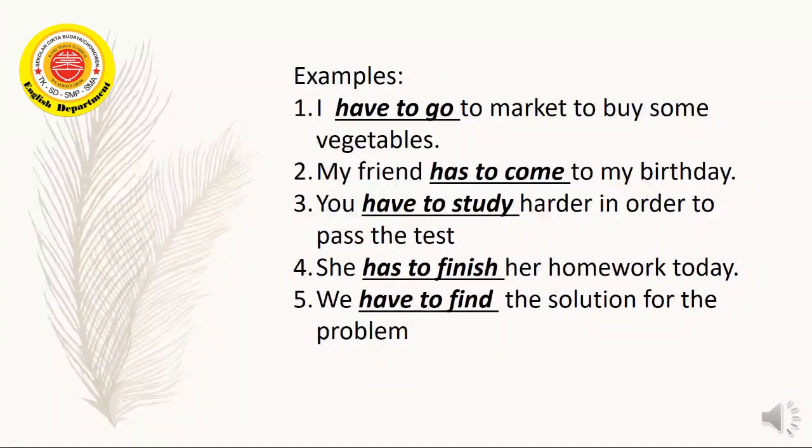Number two: My friend has to come to my birthday. My friend itu teman saya, teman saya hanya ada seseorang, berarti satu teman. Teman saya hanya ada satu, boleh saja dia he atau she, terserah mau pakai subjek he atau she. Subjeknya he atau she berarti hanya ada satu, maka kita harus menggunakan has to. We should use has to. Come, di sini come juga harus menggunakan kata kerja dasar, verb one. Come to my birthday.